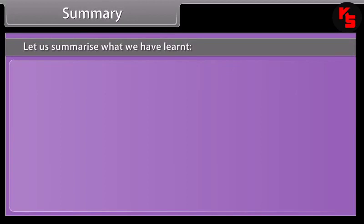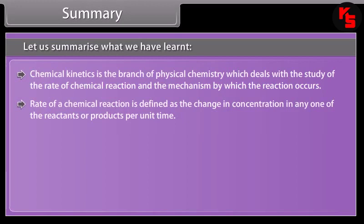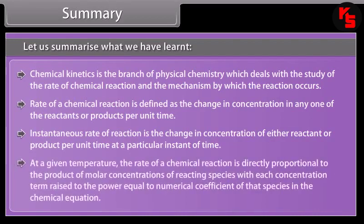Let us summarize what we have learned. Chemical kinetics is the branch of physical chemistry dealing with the study of the rate of chemical reaction and the mechanism by which reactions occur. Rate of a chemical reaction is the change in concentration of any reactant or product per unit time. Instantaneous rate is the change in concentration per unit time at a particular instant. At a given temperature, rate is directly proportional to the product of molar concentrations of reacting species, with each term raised to the power of its stoichiometric coefficient.